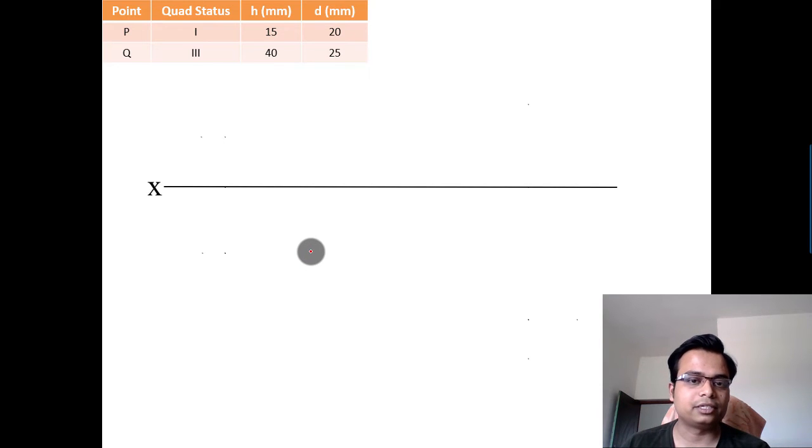Let's go ahead. So first of all, you need to draw an XY line. Let us try to locate this point P first: H and D, first quadrant. H above and D below. With H you need to put a dash—that means a front view—and with D you don't need to put a dash—that means a top view.